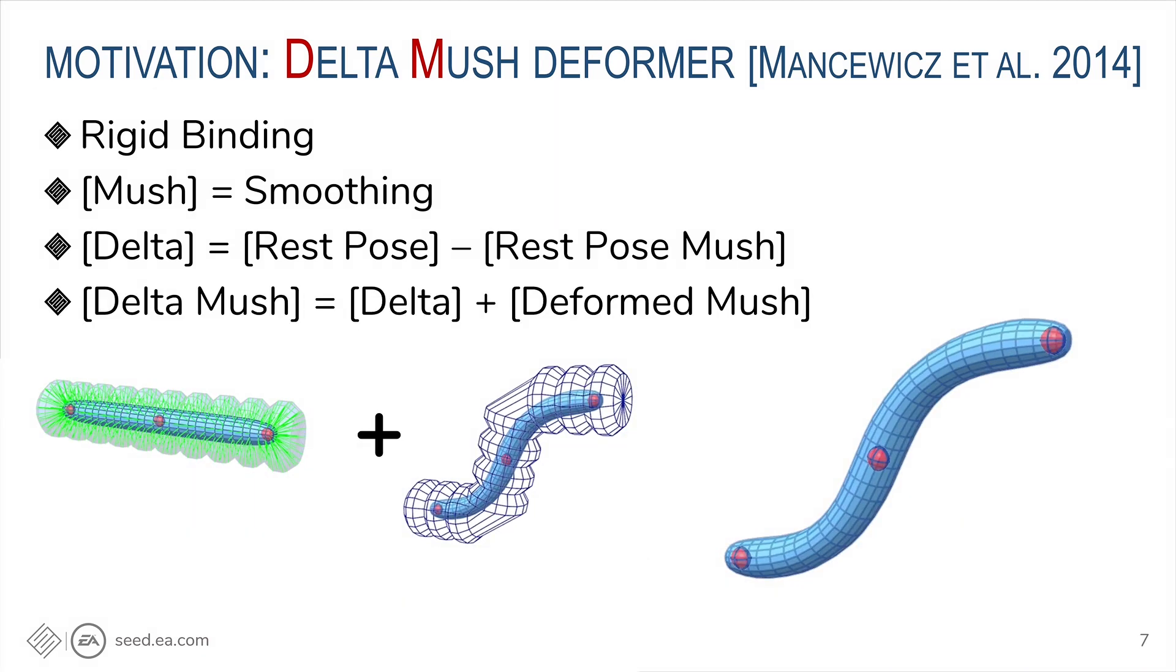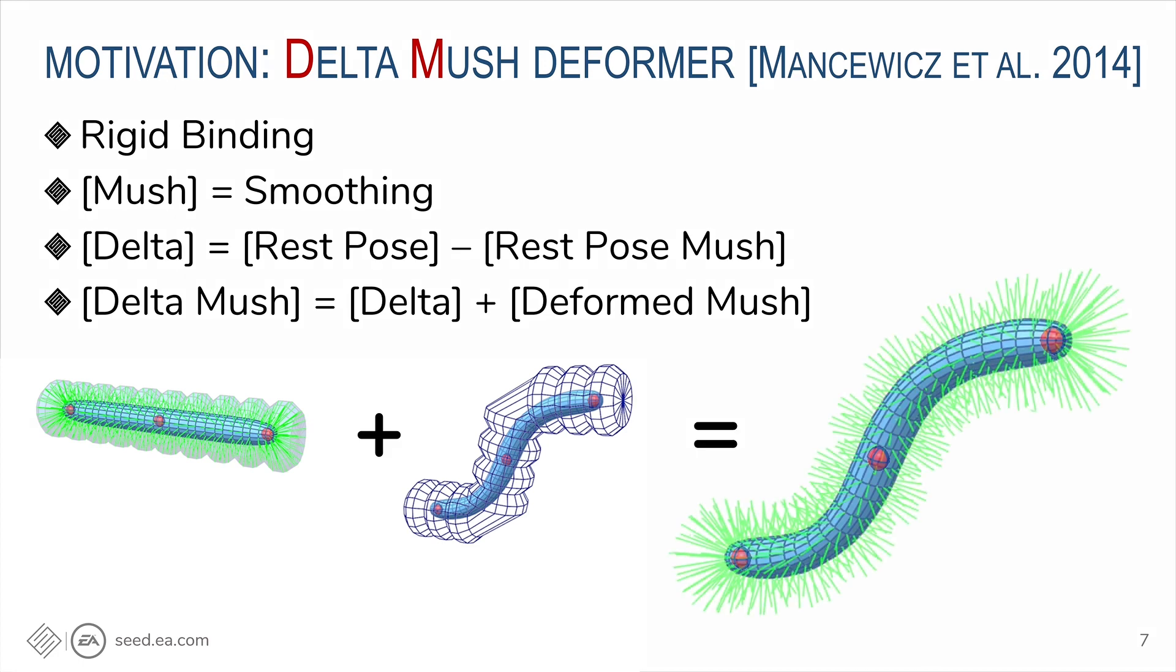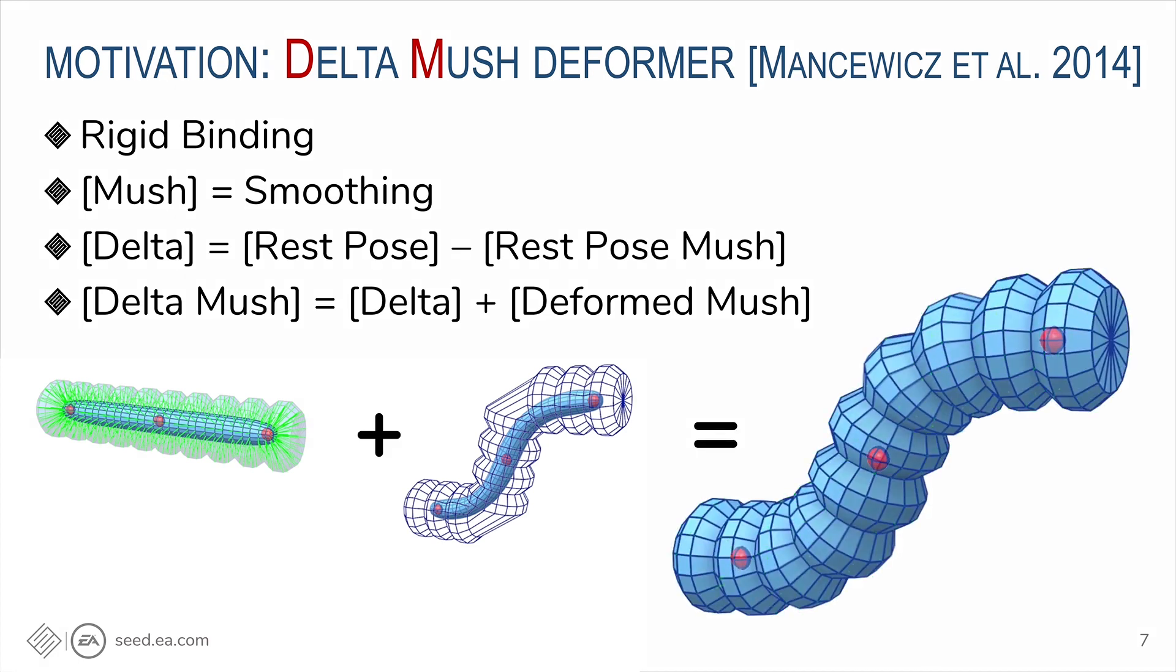So now we'll use the Delta to recover the surface details of the mush. When we add Delta on top of the mush using the local coordinate frame of the deformed mush, we have the result with smooth deformation and sharp geometry details. The great thing about Delta mush is it produces good quality deformation with very simple concept and setup.